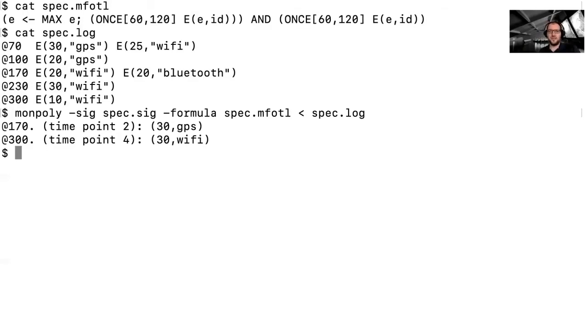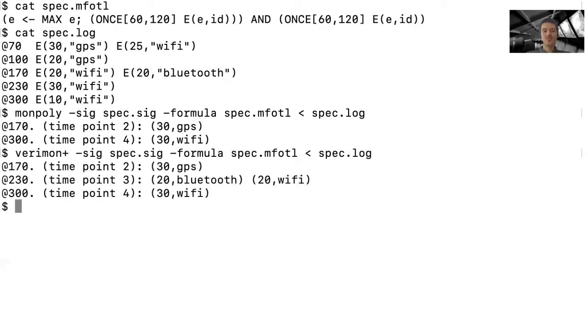I see two problems. First, you said Verimon Plus, but you typed Monpoly. And second, shouldn't there also be an output at the timestamp 230? Indeed. I keep confusing Monpoly and Verimon Plus. Fortunately, Verimon Plus has the same interface, so I can easily fix that. Oops, you are right. I am quite convinced that the output of Verimon Plus is correct, because it is verified. So it looks like a bug in Monpoly. I will need to further investigate this. This is quite impressive and confirms the value of formal proofs. You should submit a paper to ECCAR. I heard they might be interested in such insights. I will consider that.